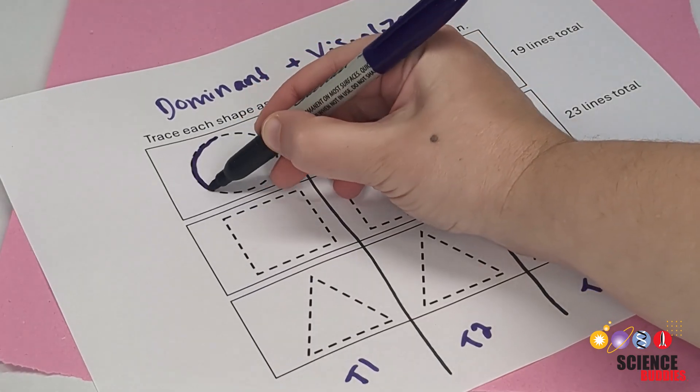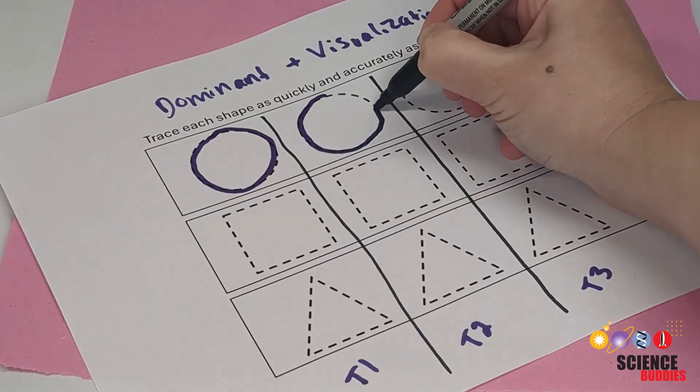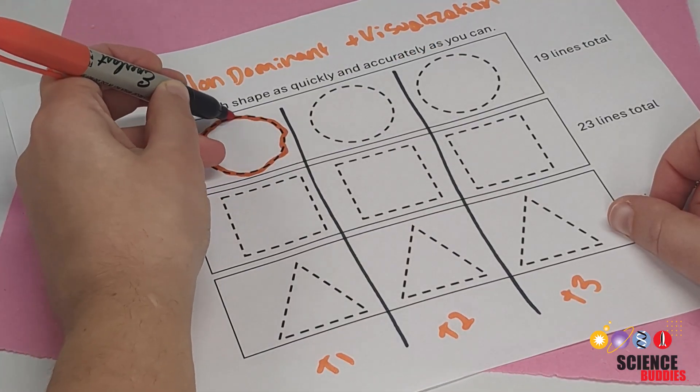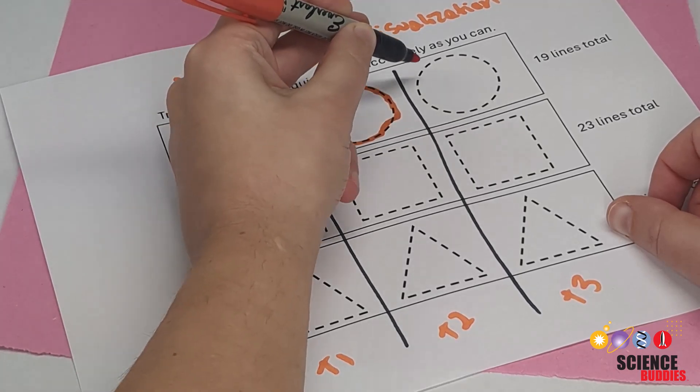After visualization, repeat each of the conditions as before to see if visualization can improve the accuracy of fine motor skills. Does visualization impact them? What do you observe?